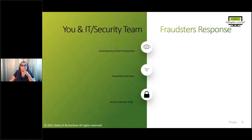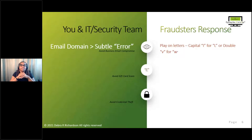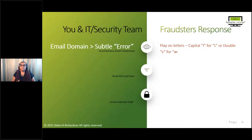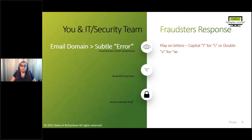The first process you most likely have in place is checking the email domain — you probably check for extra letters and subtle misspellings. But it's not even about that anymore. Fraudsters are using a play on letters: a capital I for lowercase L, or double V for a W, making it harder to spot a cyber criminal trying to perpetrate a business email compromise scam.